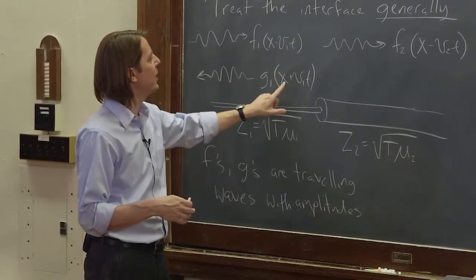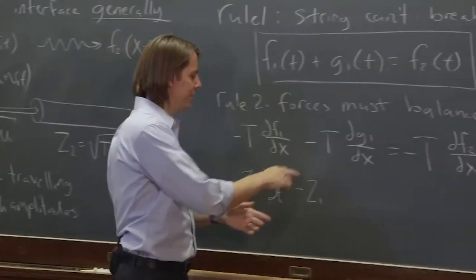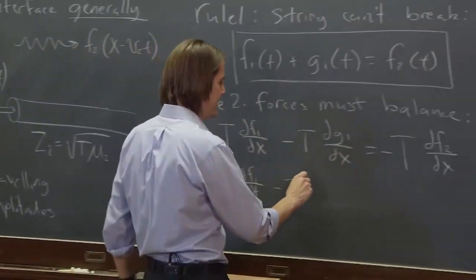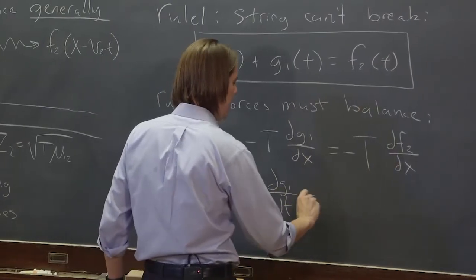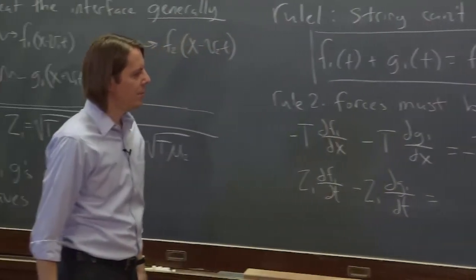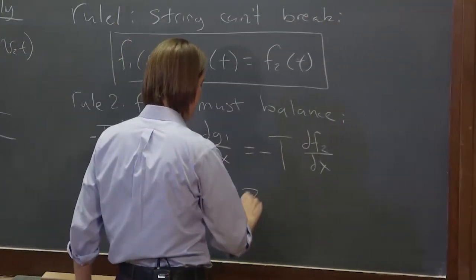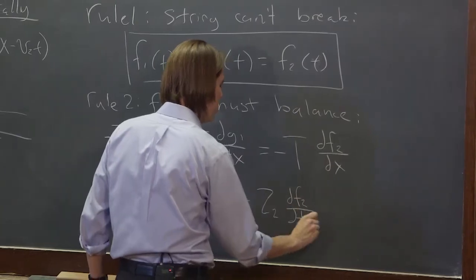And then this one stays negative because it's going the other way. And all that discussion of x minus vt's and all those partials we messed around with, we had x minus vt. If you do x plus vt, the negative sign is the opposite. So this stays negative. And it's z1 dg1/dt. And those together must equal z2, we're now in the other medium, df2/dt.